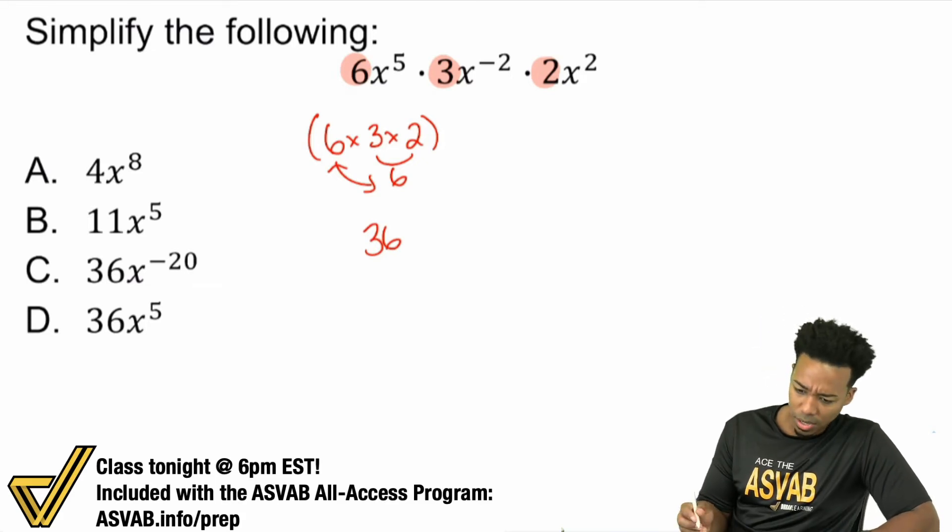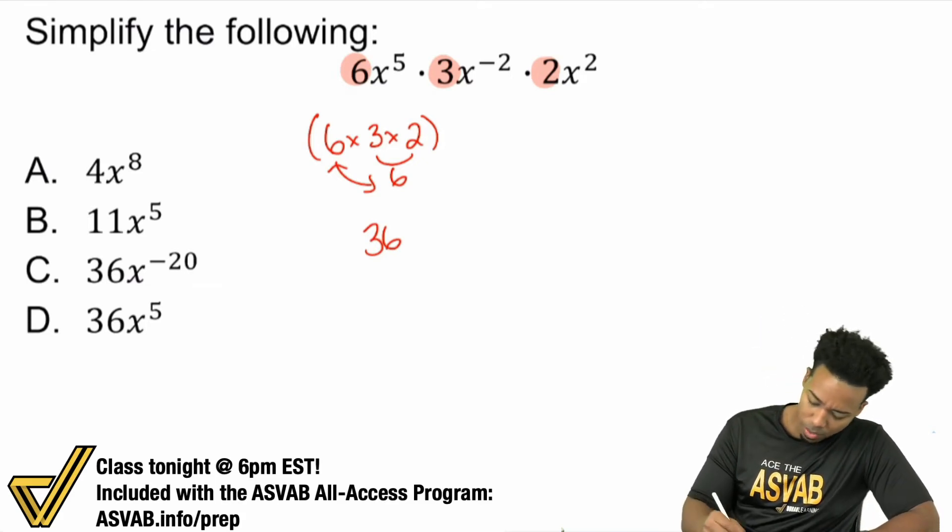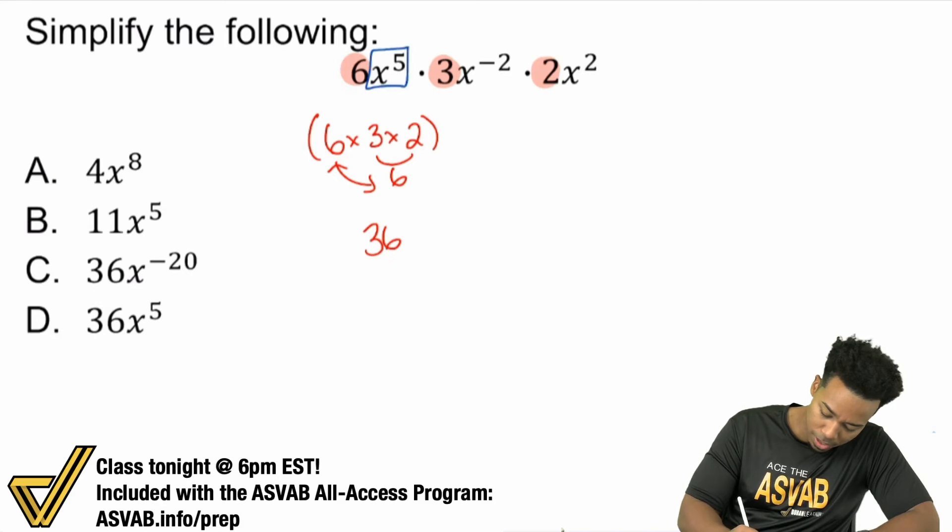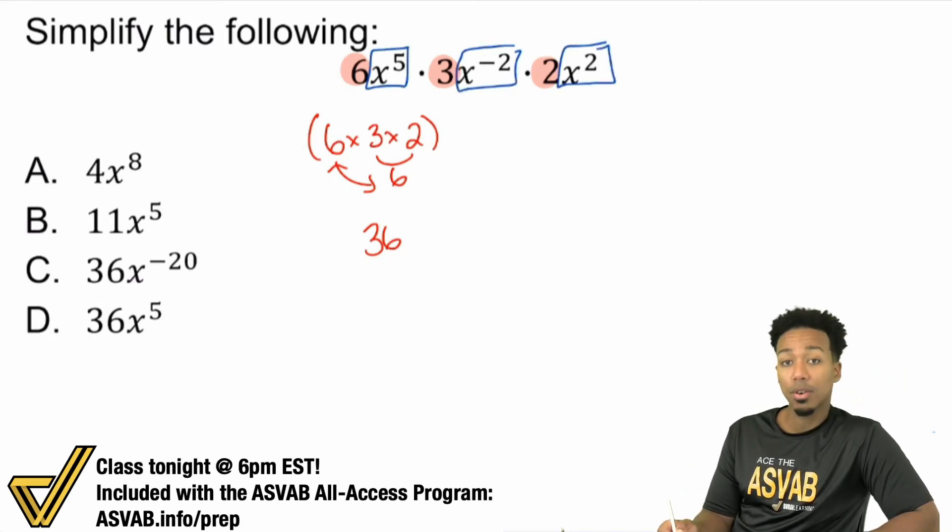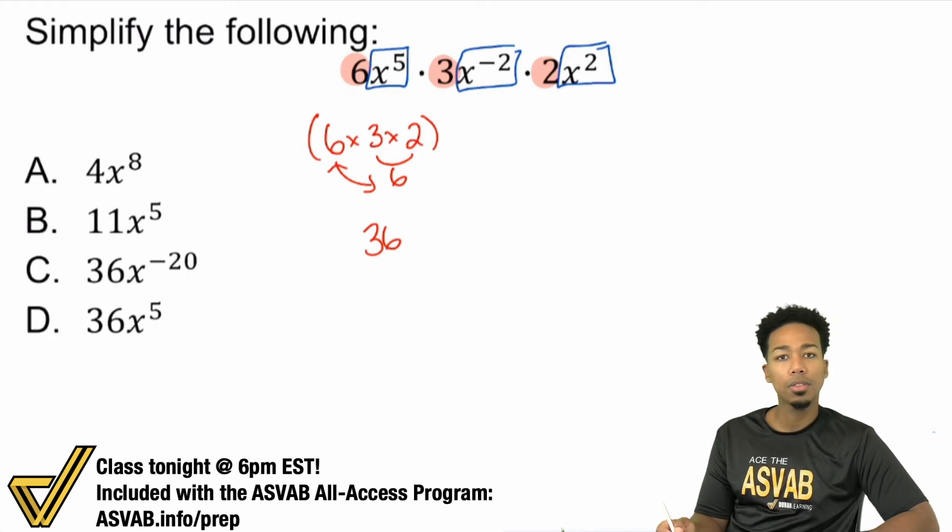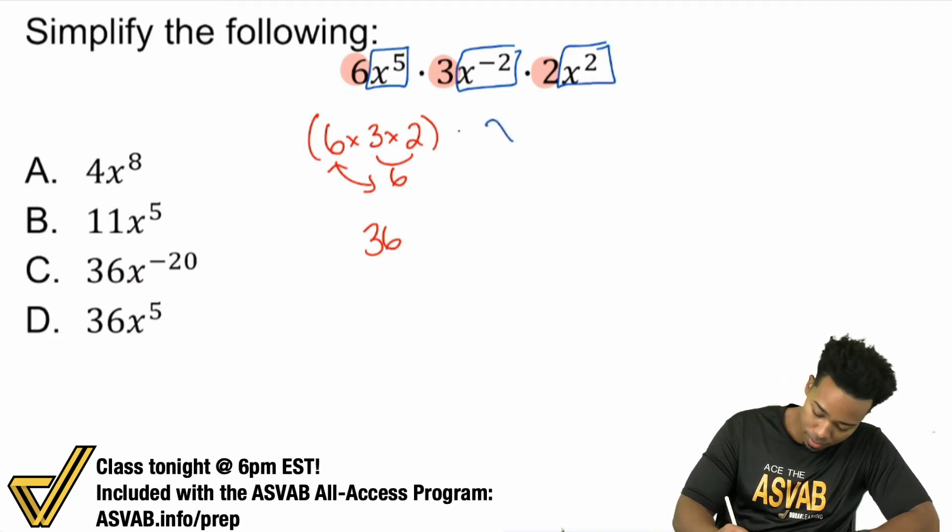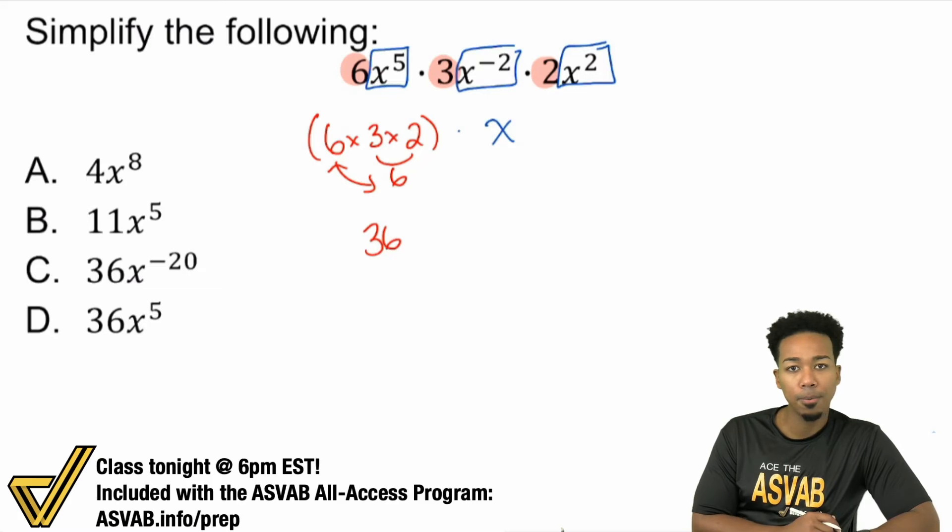But it's really dealing with those variables that a lot of us have trouble with. We have x to the power of 5, x to the power of negative 2, and x to the power of 2. This is called the product of powers law. Product means multiplication. When you are multiplying powers, you're going to keep that same variable but add those exponents.